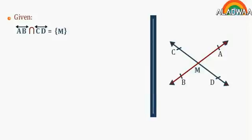In the shown figure, given AB is a straight line, intersect CD straight line at the point M. Required to prove, number 1: